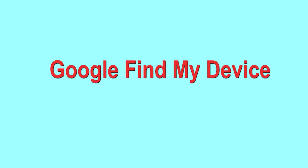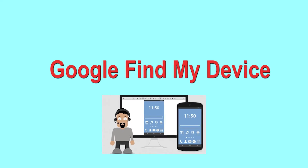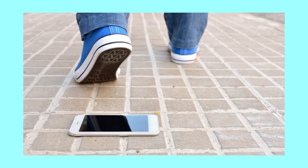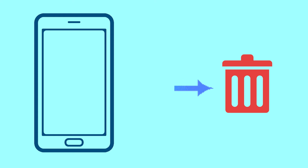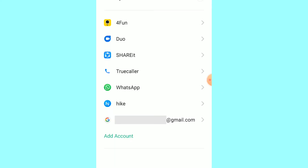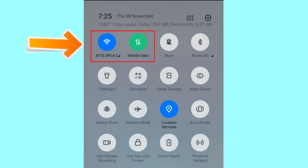Hard reset with Google Find My Device. This is the best method to reset your Android phone remotely. This method is useful when you lose your phone or are not able to access your mobile. This method also deletes all your Android phone data. After your device has been erased, you can't locate it.